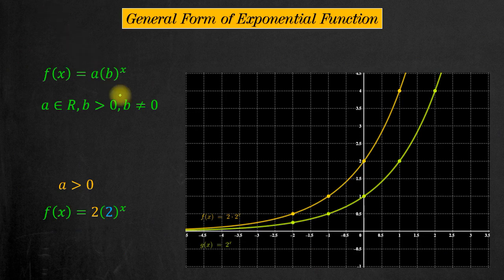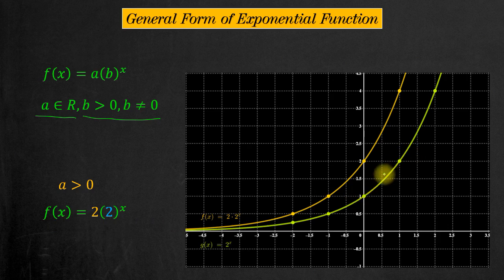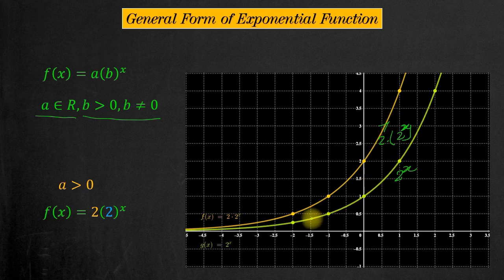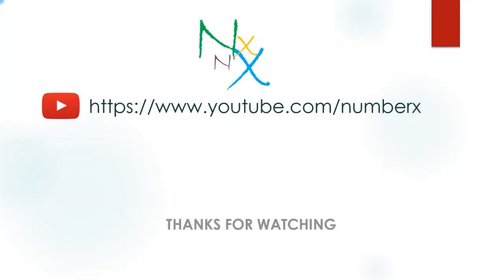Now let's look at the general form of exponential function. If you add a coefficient a, which is a real number, the function a·b^x is called the general form. The same restrictions on b apply as before. When a > 0 — for example, a = 2 and base = 2, giving f(x) = 2·2^x — the nature of the curve is the same as the base curve f(x) = 2^x, but the points are scaled by a factor of 2. When the leading coefficient is negative, it acts like a mirror and flips the curve.